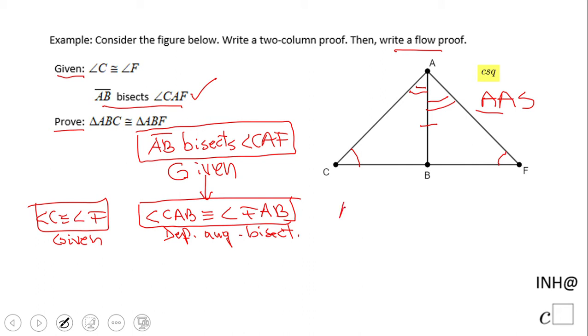And then what else do I have? Remember we have this AB congruent to itself—AB, a common side. We call this reflexive property.